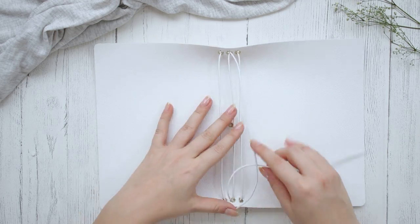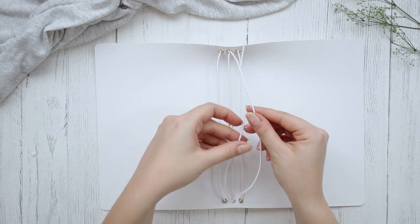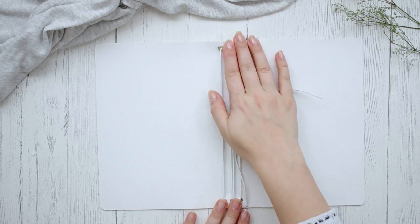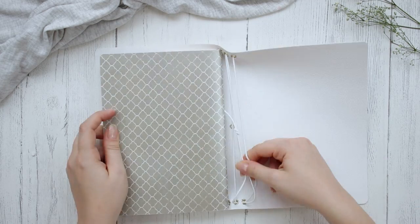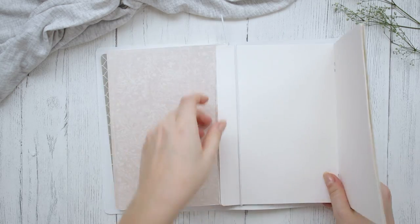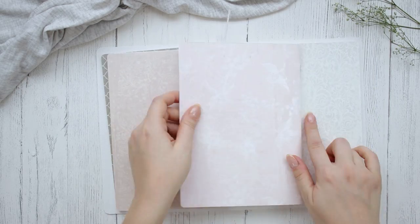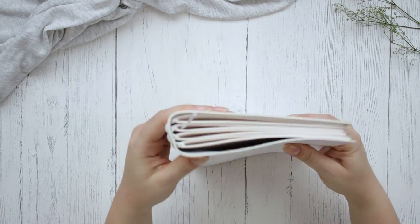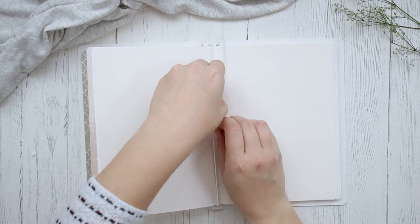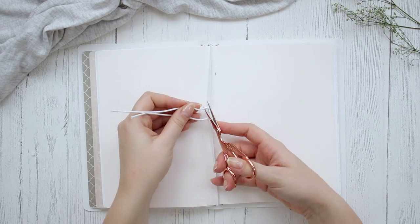Make a knot with the tails of the elastic, but don't tie it too tight just yet. You do want the cover to bend just a tiny bit. Open your notebooks in the middle and insert them through each of the elastic bands. Make sure everything is nice and secure, but not too tight. Adjust the elastic as needed and then secure the knot and trim off the excess.